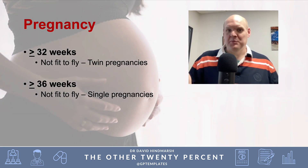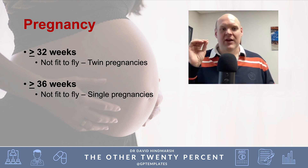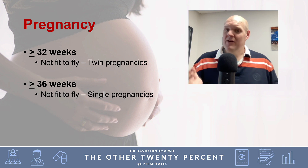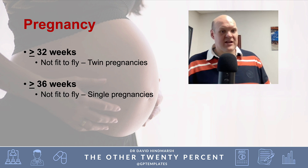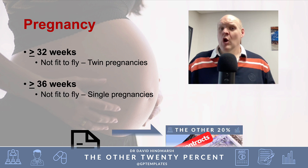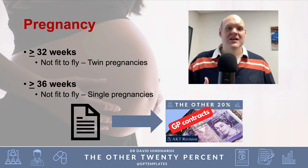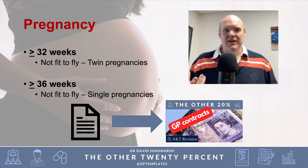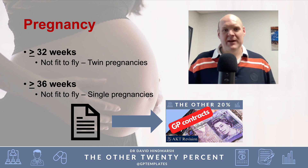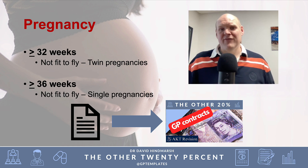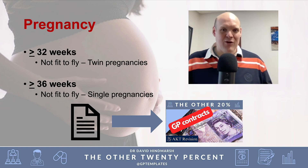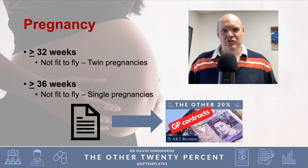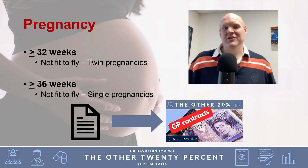Pregnancy often comes to GPs. From 32 weeks onwards patients are not fit to fly if carrying a twin pregnancy, and from 36 weeks for single pregnancies. The GP may be asked to write a statement confirming the patient's travel date, how many weeks pregnant they will be on both the outbound and return flight, and their expected delivery date — all of which should be on the record. As noted in the GP contracts video linked below, this is not funded, so make sure you charge for it.